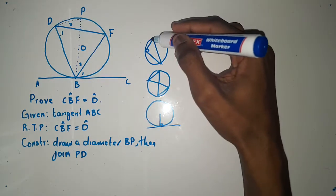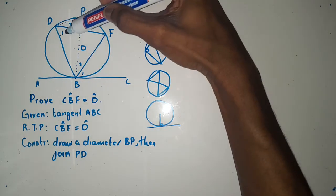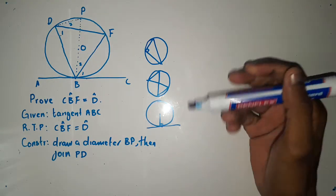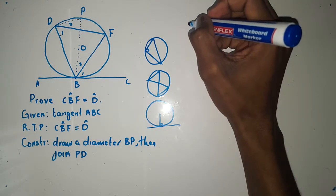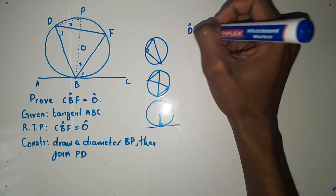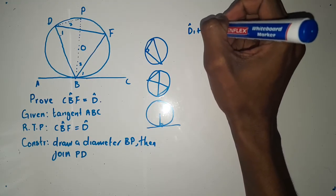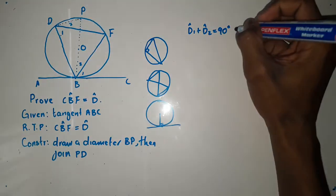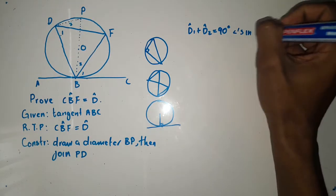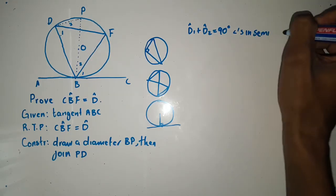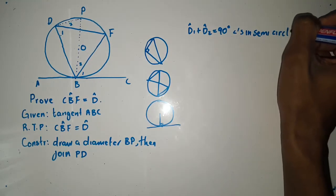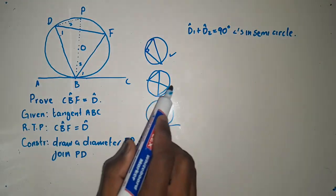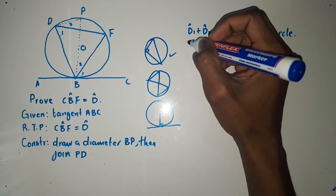We consider the first theorem by saying angle D1 plus angle D2 equals 90 degrees — angles in a semicircle.